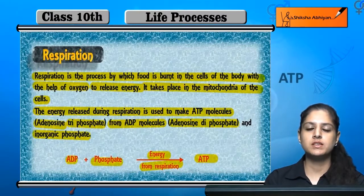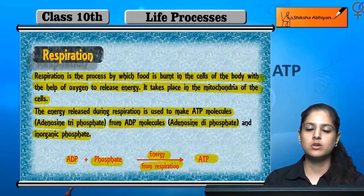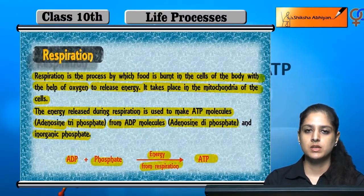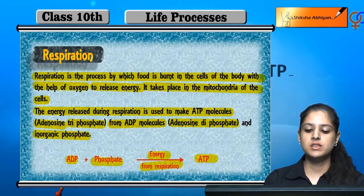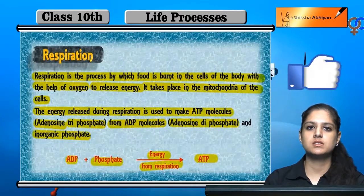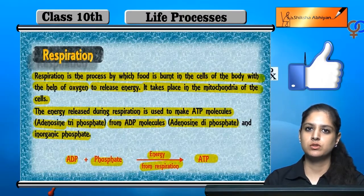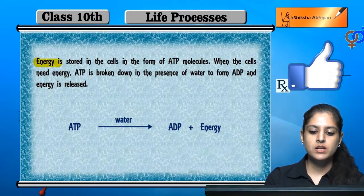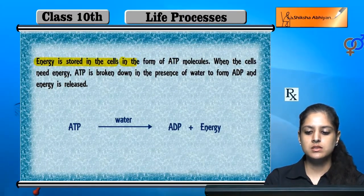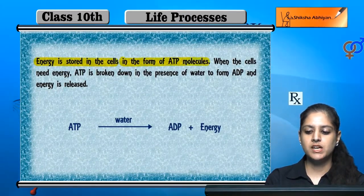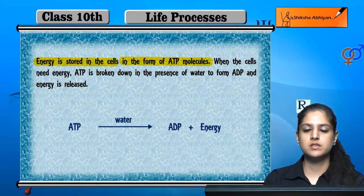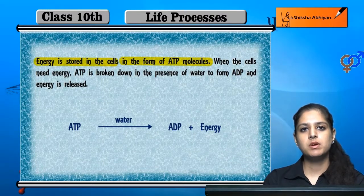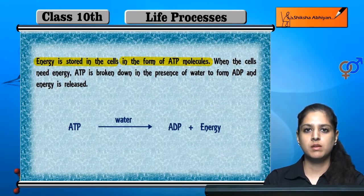In general terms, we call it water, oxygen, and carbon dioxide — we call it respiration. In chemical terms, we define respiration differently. Energy is stored in the cell in the form of ATP molecules. The energy from respiration is stored in ATP.